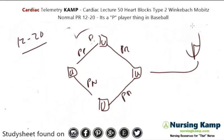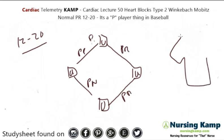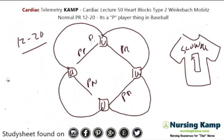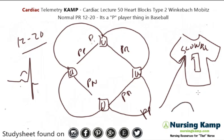We talked about first degree heart block and we talked about Slowpoke. Slowpoke is our first baseman and he's a first degree heart block. We call him Slowpoke because he doesn't take a normal PR — he takes a slow journey. But he touches all the bases, so you see a PR with a QRS, but the PR interval is long and slow, generally anywhere from 20 to 30. That's first degree heart block.